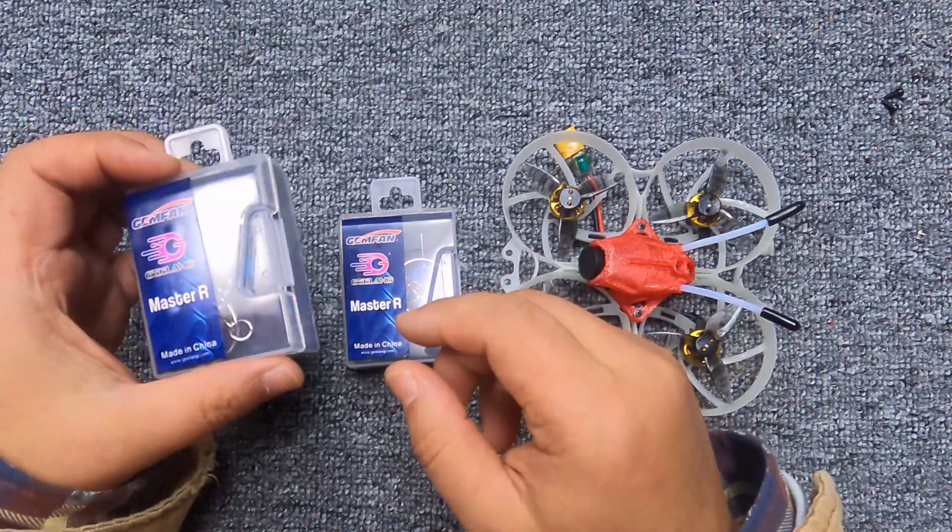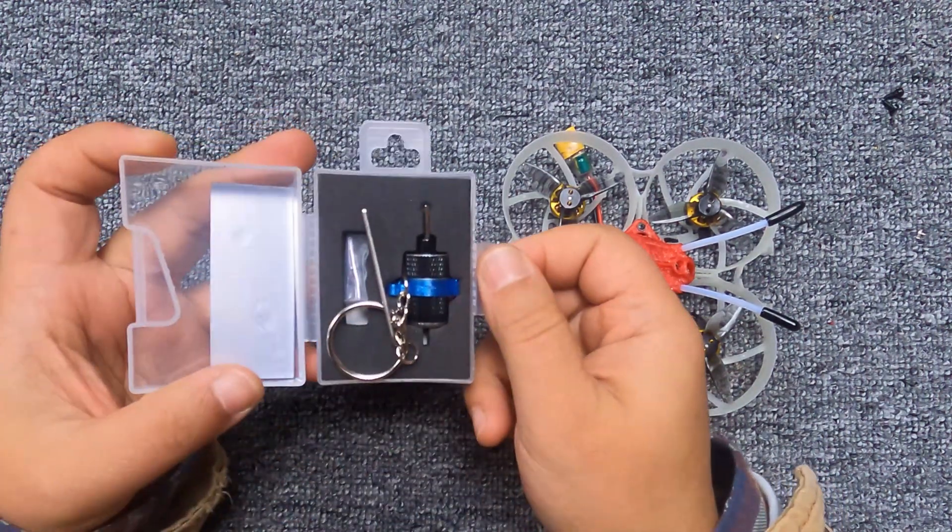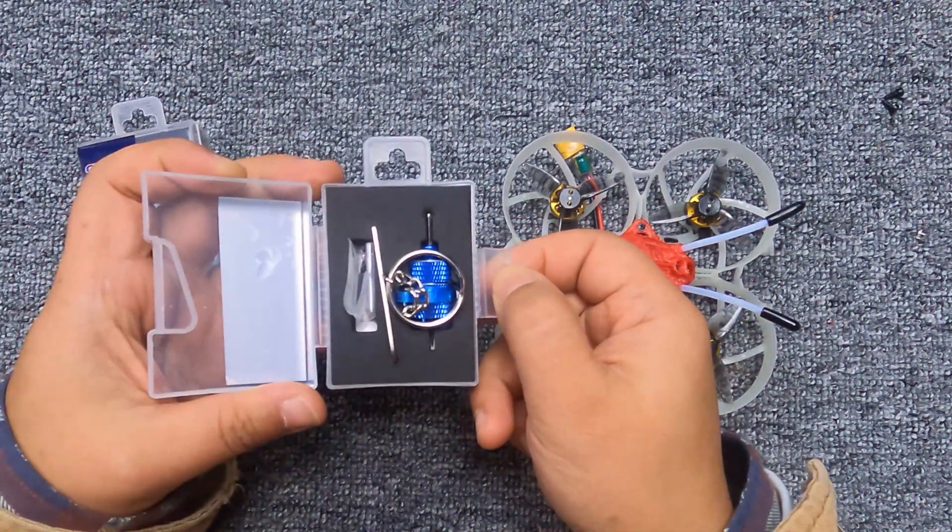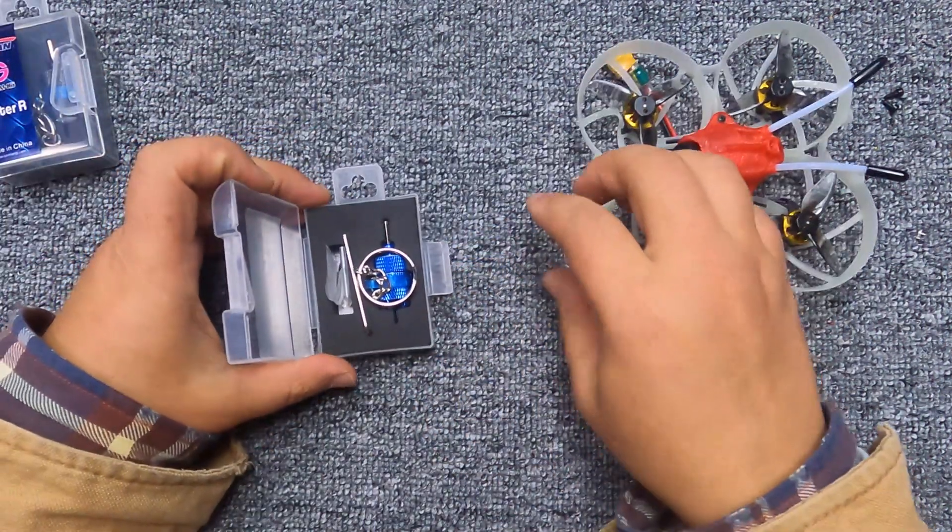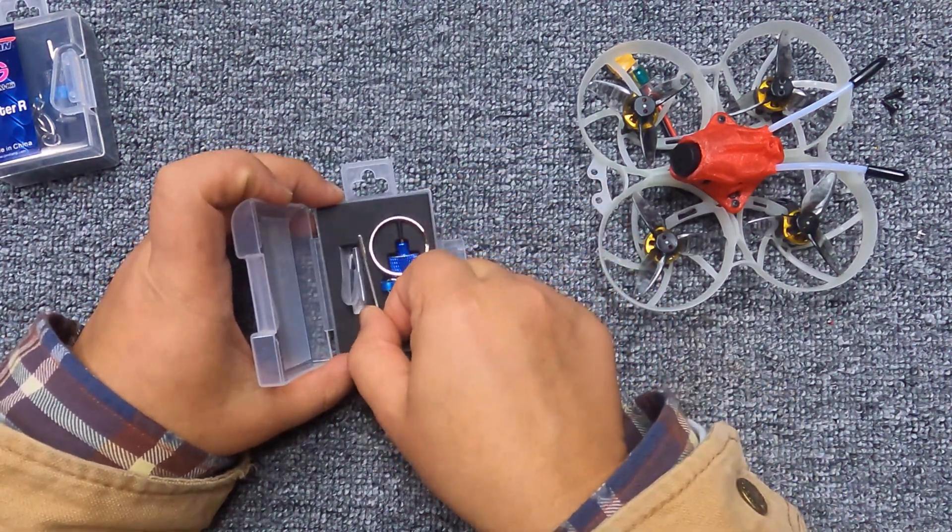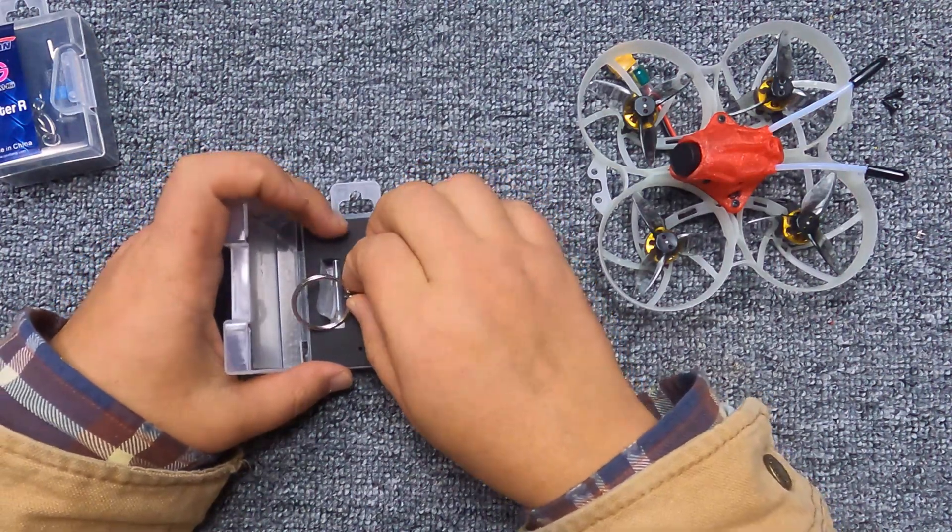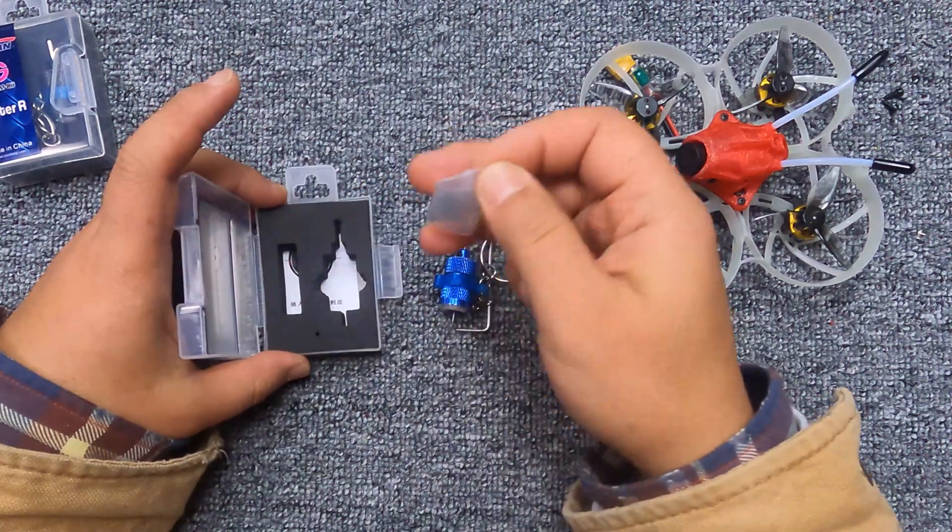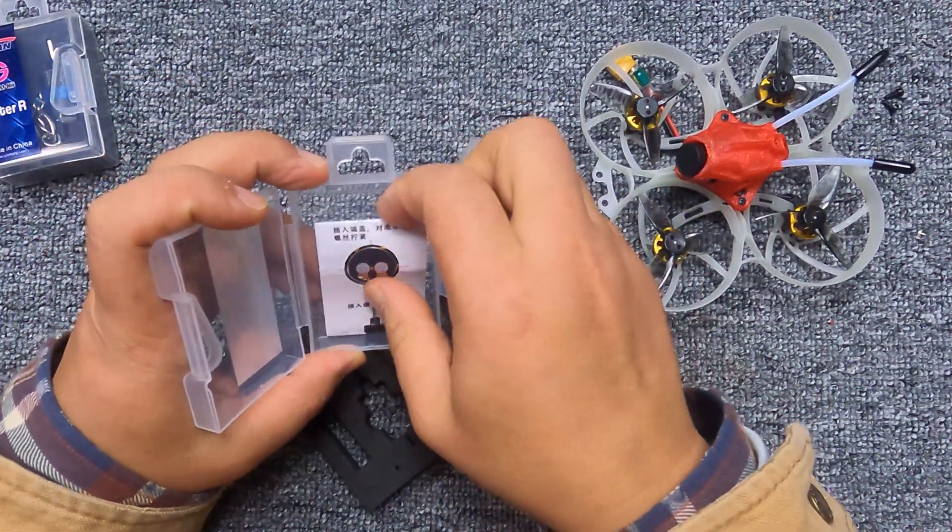Right now we have two different colors, one is black and the other is blue. When you unbox this box, you will see a screwdriver, the propeller remover, some screws, and there's a manual on the bottom of the box.